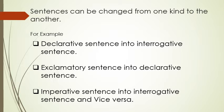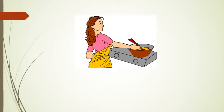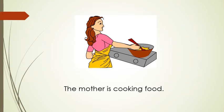Now, let's have a look at the picture — what the mother is doing. We can see that the mother is cooking food. If I ask, is it called a sentence? The answer is yes, it is called a sentence. Because we know that a sentence is a group of words which makes a complete sense. After reading this sentence — 'The mother is cooking food' — we can clearly visualize the picture in our mind.